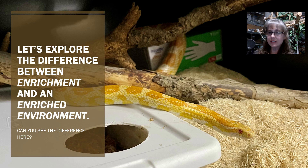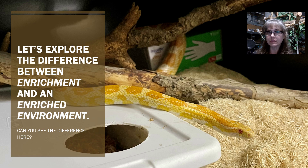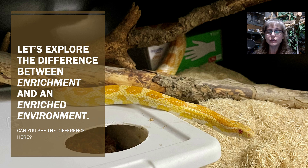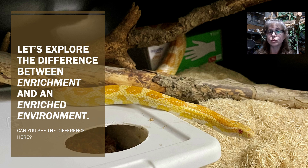Can you see the difference in this picture? This is our corn snake Candy Corn, and she has both enrichment and an enriched environment as of the moment this picture was taken within her enclosure. Look closely and tell me if you can pick out the items that would be considered part of her enriched environment, and if you can pick out the item or items that might be considered enrichment.